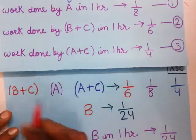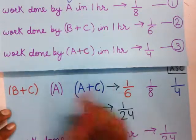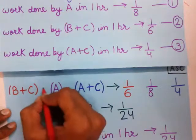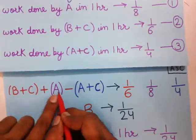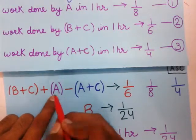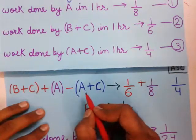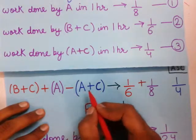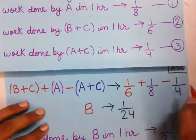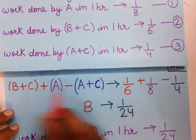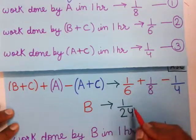We need to find only B, so we put a plus sign in front of A and a minus sign in front of A plus C. The A plus C terms cancel out and we are left with only B. On the other side: 1 by 6 plus 1 by 8 minus 1 by 4, which equals 1 by 24. So the value of B is 1 by 24.